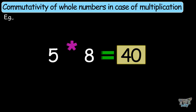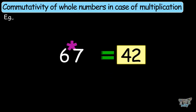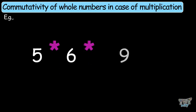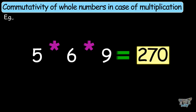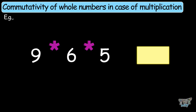Let's take another example: 6 times 7 is 42, and 7 times 6 is 42. So you can move the numbers or multiply them in any order. Let's have another example with more than two numbers: 5 times 6 times 9. Calculate the answer — it is 270. Now move the numbers or try to multiply them in any order, like 9 times 6 times 5. The answer is again 270.